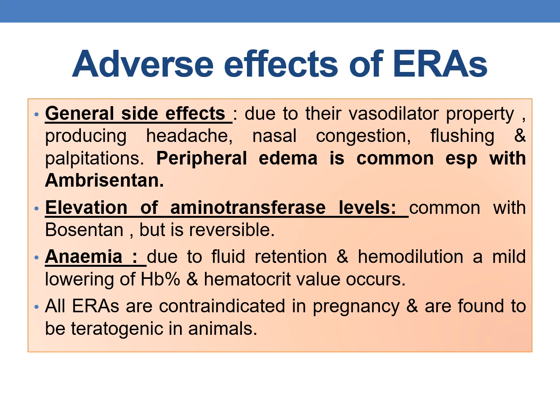The general side effects of endothelin receptor antagonists are due to their vasodilator property, producing headache, nasal congestion, flushing, and palpitations. Peripheral edema is also common, especially with ambrisentan. A major adverse effect is elevation of aminotransferase levels, common with bosentan but reversible. Anemia — a mild lowering of hemoglobin and hematocrit — occurs due to fluid retention and hemodilution with endothelin receptor antagonists. All endothelin receptor antagonists are contraindicated in pregnancy and are found to be teratogenic in animals.